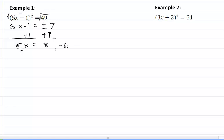We are going to divide both of those by 5. And so we are going to get x is equal to 8 fifths and negative 6 fifths. And again, keep up your habit of checking your solutions to make sure that they work.